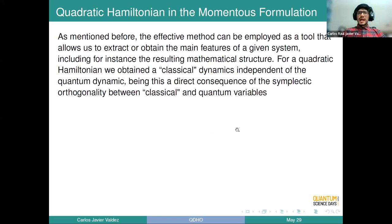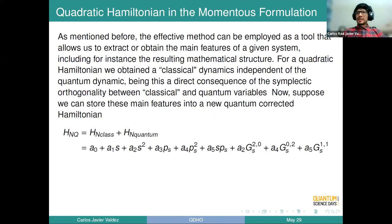As mentioned before in the Bateman model, we already have the pathology that the physical momenta differ from the canonical momenta. I want to provide a way to study that kind of system. Let us think that this method allows us to extract the main features of a Hamiltonian, and suppose there is a way to store only the superficial features of that Hamiltonian into a new one.